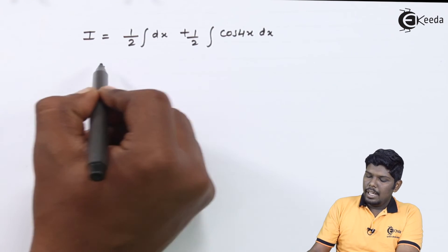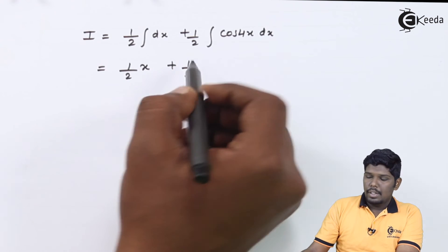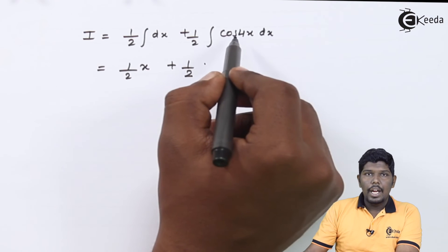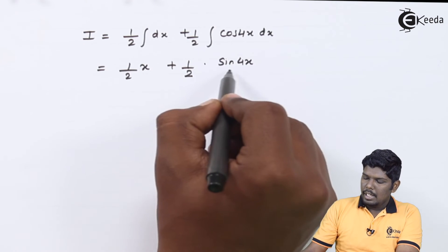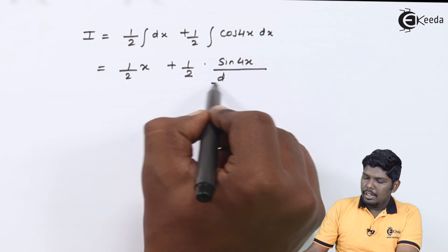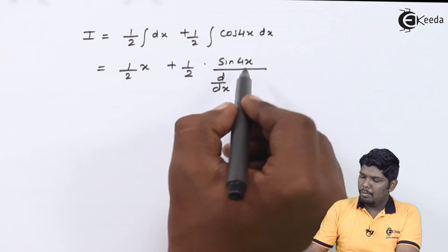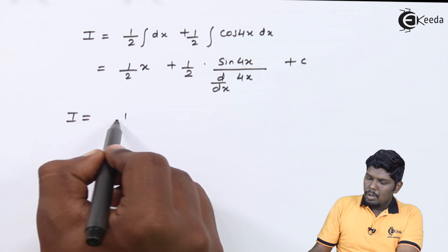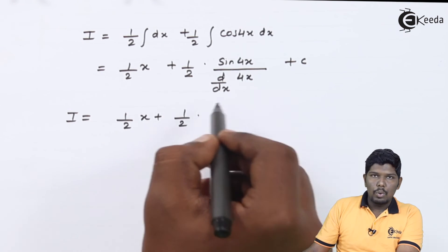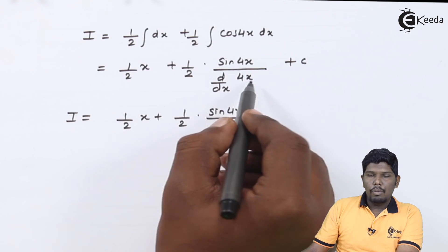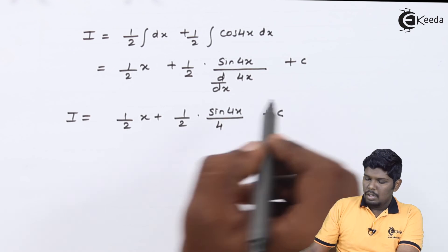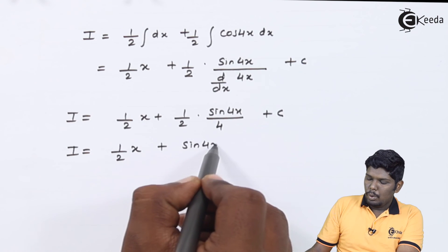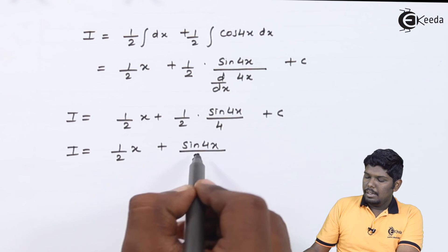Now, we know very well that integration of dx is x plus half. I can compare cos 4x with integral cos x. Integration of cos x is sin x. Similarly, integration of cos 4x will be sin 4x. This being a composite function, we will divide the derivative of the part which is replacing x. x is replaced by 4x. Therefore, d by dx of 4x plus c. The final answer will be 1 upon 2x plus 1 upon 2 sin 4x. The derivative of 4x is 4 plus c. On further simplification, this will give you half x plus sin 4x upon 2 into 4 is 8 plus c.